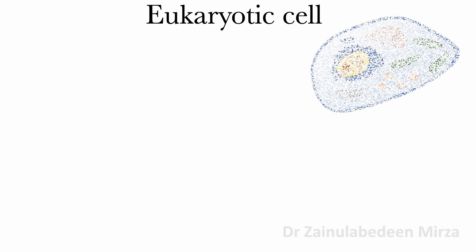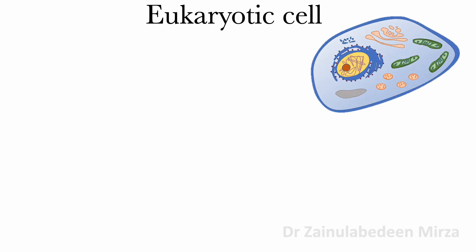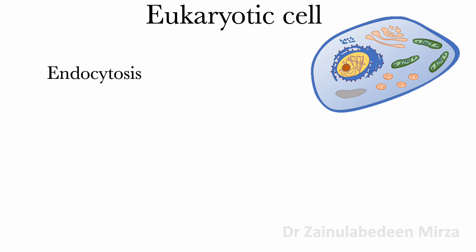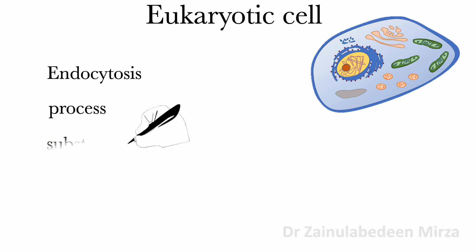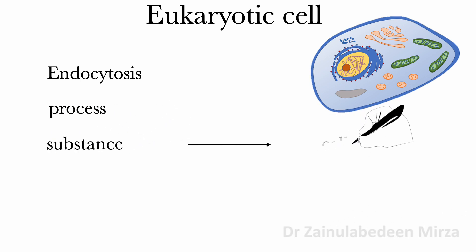Eukaryotic cells can take micromolecules from surrounding medium by a cellular process called endocytosis. Endocytosis is a process by which substances are brought into the cells. The material to be internalized is surrounded by an area of plasma membrane.